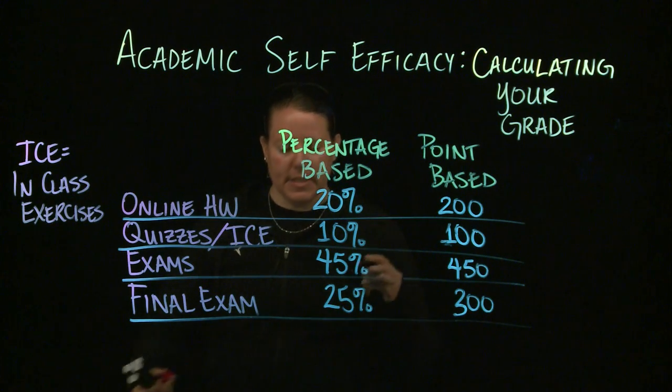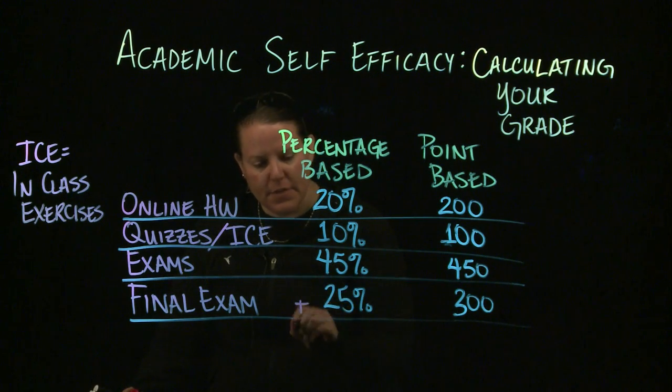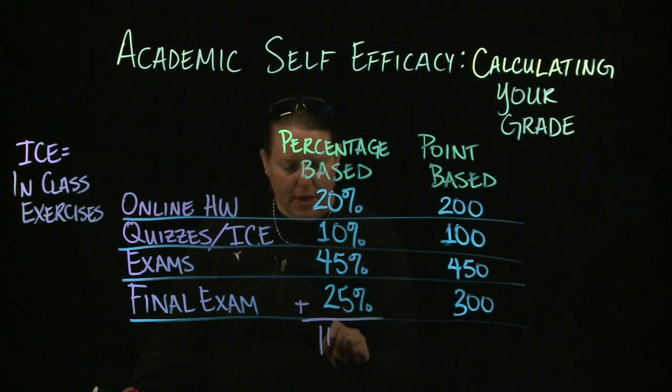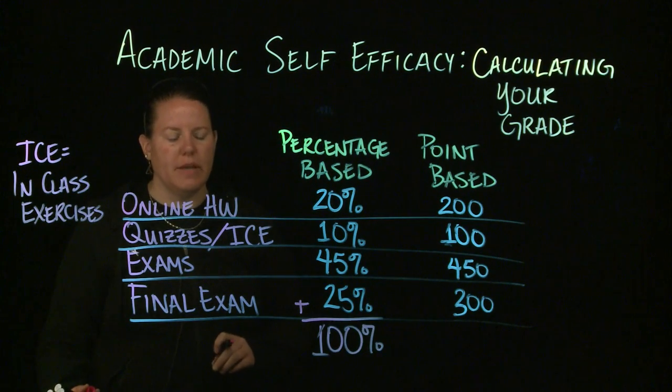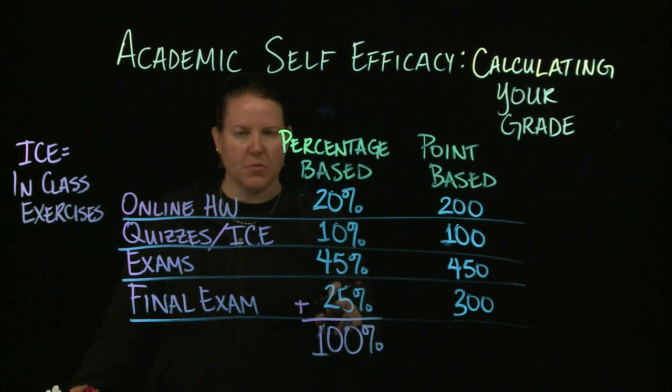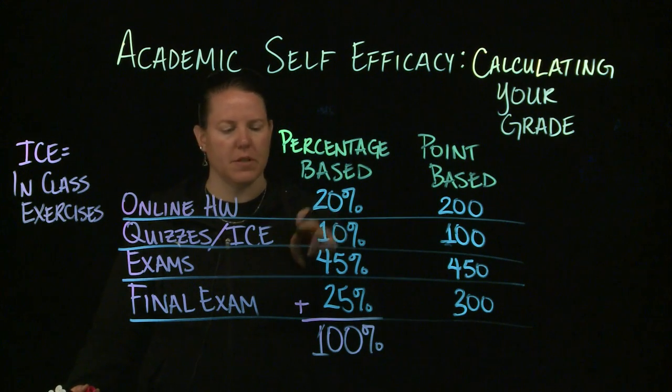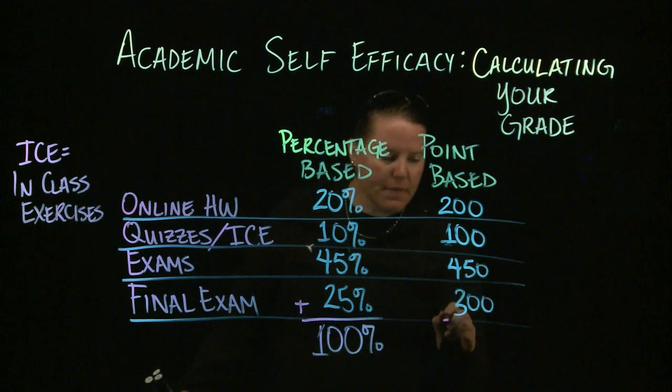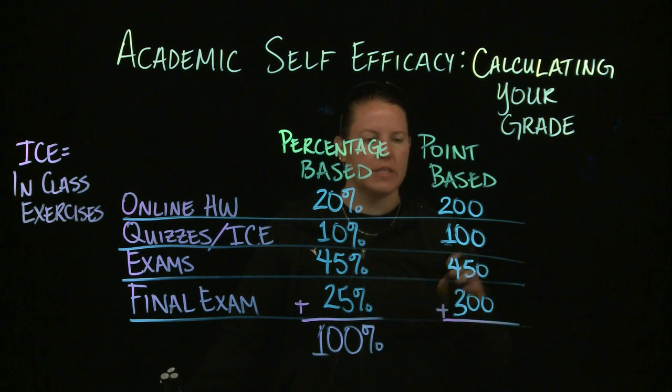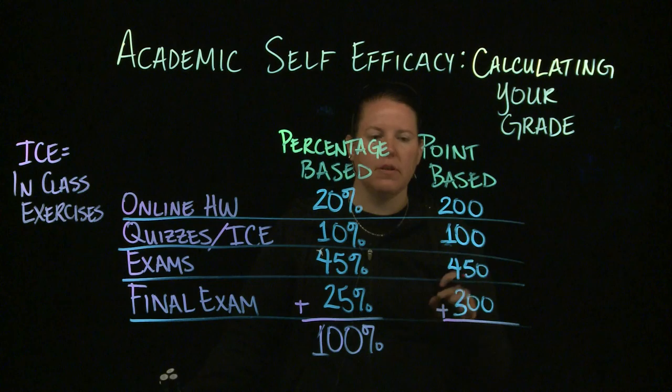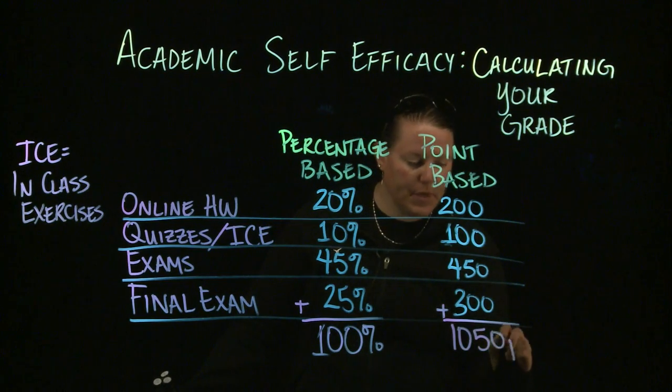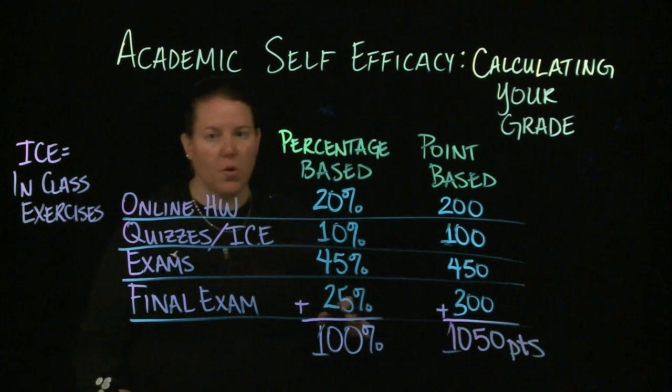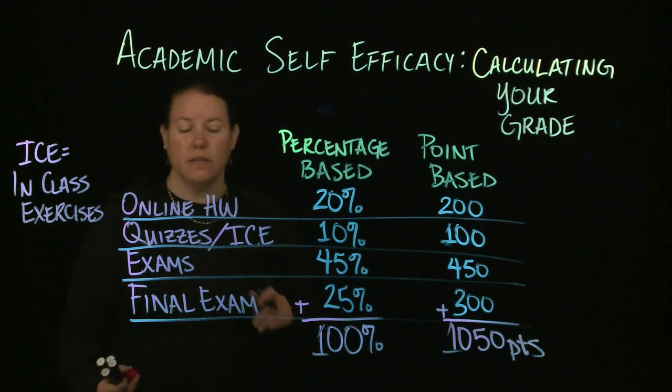If it's percentage-based, then it should add up to be 100% because your final score should be taken out of 100%. Here, you actually have to add up what the total number of points is. So 200 plus 100 is 300, 300 plus 300 is 600, and plus 450 is 1050. So you have to figure out what the total number of points in that class looks like.